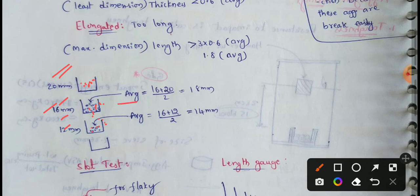So for the 20 mm and 16 mm fraction, (20 + 16) / 2 is equal to 18 mm as the mean dimension.